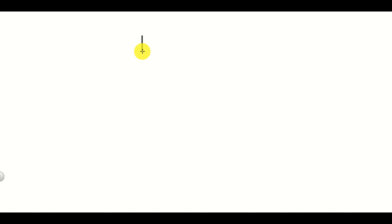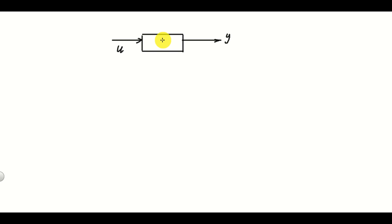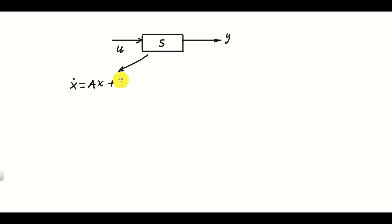This is our dynamical system. It has an input and it has an output. The input is U and the output is Y. I will denote our system by S. We have several representations of such dynamical systems. Arguably the most popular representations are the state space model, which in the case of linear systems looks like this. Here X is the internal state of the system.